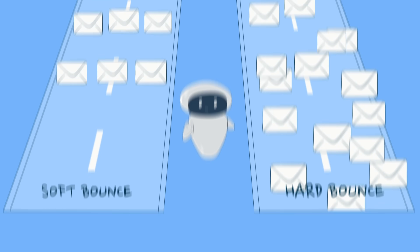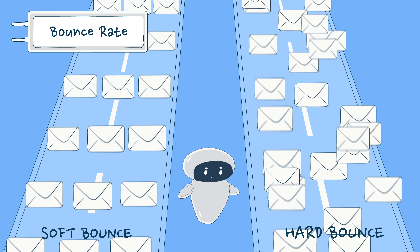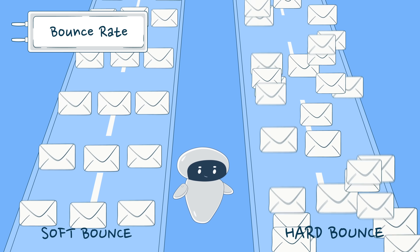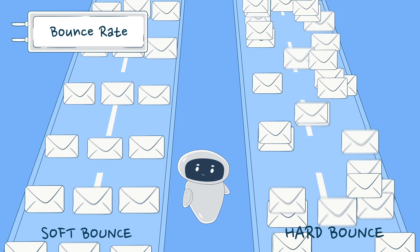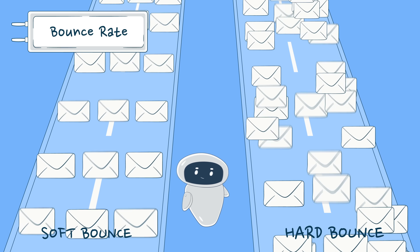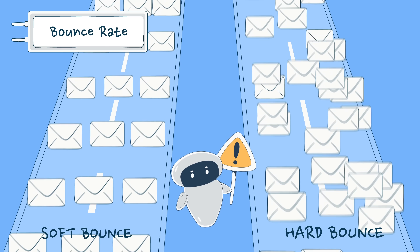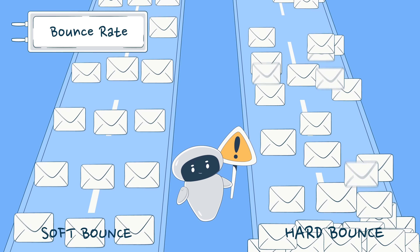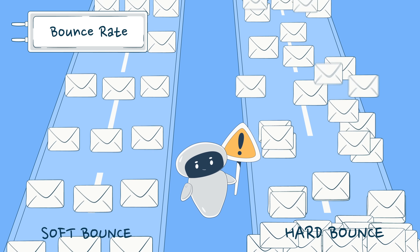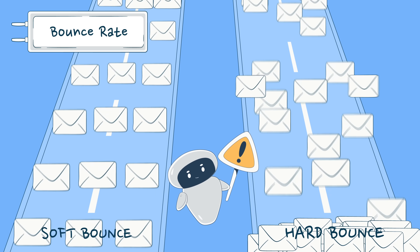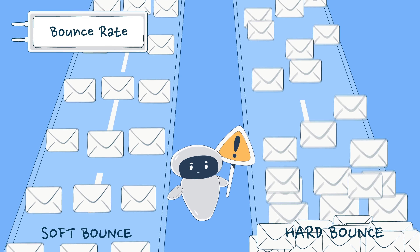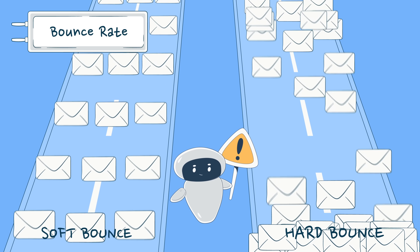Moving on to bounce rate. This metric is the percentage of emails that were sent but rejected from the recipient's end. This can be due to temporary issues, termed soft bounces, or permanent and more concerning problems like invalid addresses, known as hard bounces. Continuous hard bounces can tarnish your sender reputation, so monitor them closely. For a detailed explanation of hard and soft bounces, check out our other video dedicated to this topic.